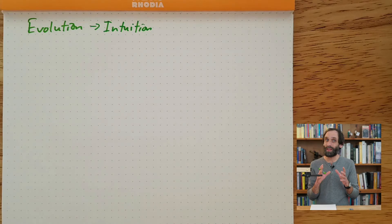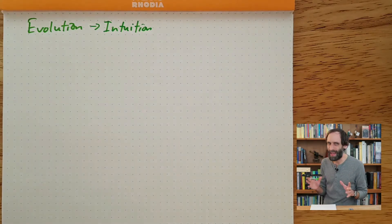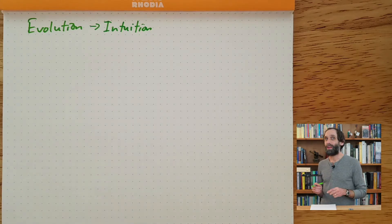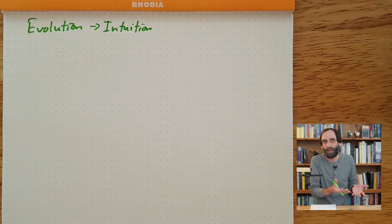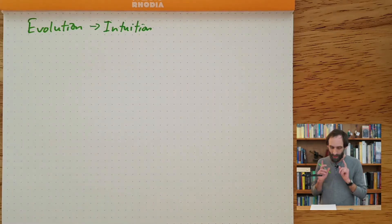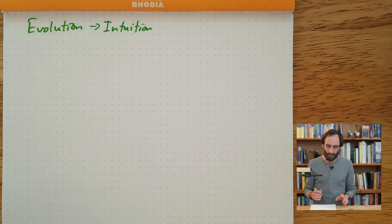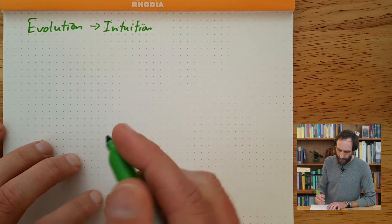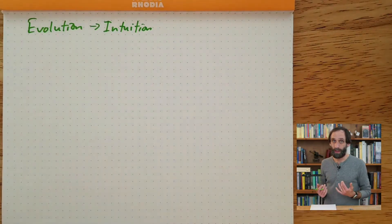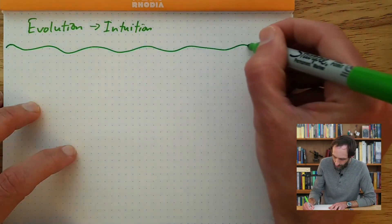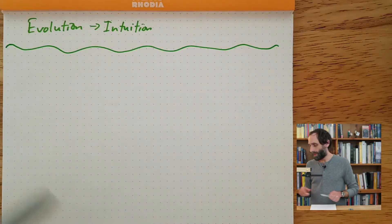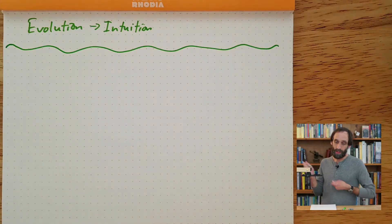Evolution gifted us with this tool of intuition. Part of our intuition is the ability to have a natural sense about things like numbers, quantity, and also about space. We can have a sense of how far away something is without actually measuring it, or a sense of how many things might be in a pile without learning about numbers. But there's a barrier between this intuition and mathematics, and I'm calling it the barrier of deduction and abstraction.